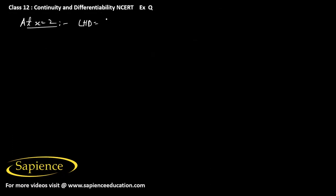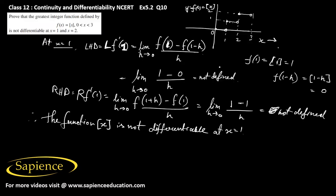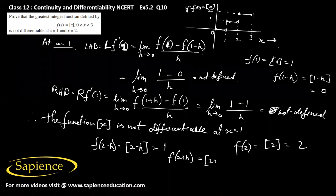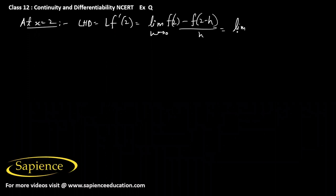Similarly at x = 2, the left hand derivative l f'(2) equals the limit as h tends to 0 of f(2) minus f(2 minus h), divided by h. Now f(2) = [2] = 2, and f(2 minus h) = [2 minus h] = 1, since 2 minus h is slightly less than 2. Also, f(2 plus h) = [2 plus h] = 2.